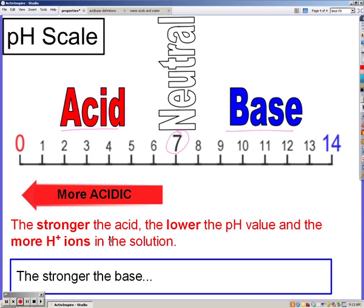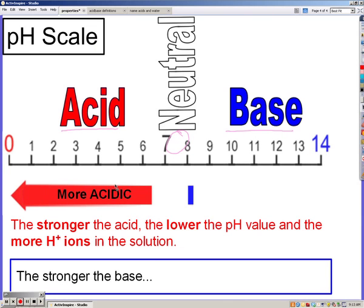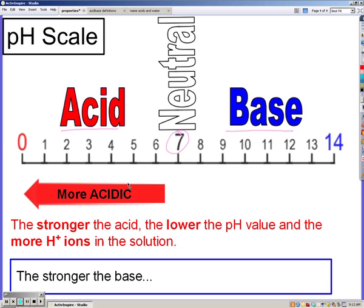The stronger the acid, the lower the pH value and the more hydrogen ions you have in solution. The stronger the base, the higher the pH value and the more hydroxide ions you have in solution.